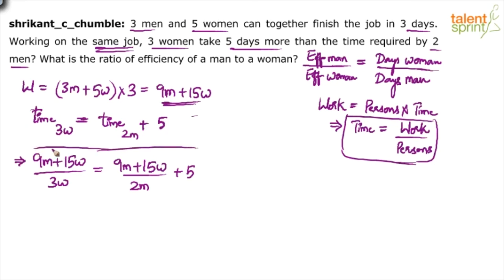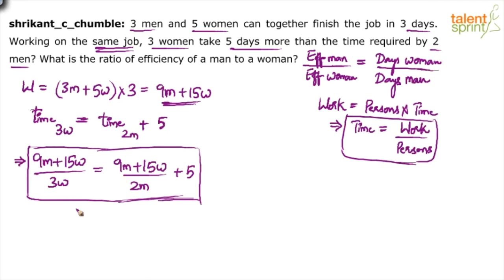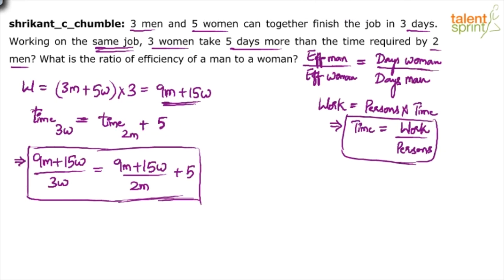If options are given, you can substitute the given ratio directly into this equation. For example, if one option says men to women equals 1 to 3, substitute 1 for m and 3 for w throughout the equation. If it satisfies the equation, that's the answer; if not, move to the next option.